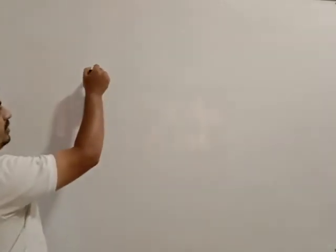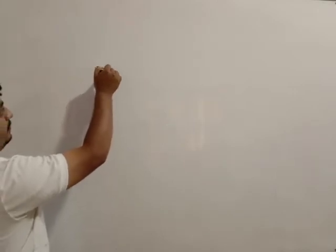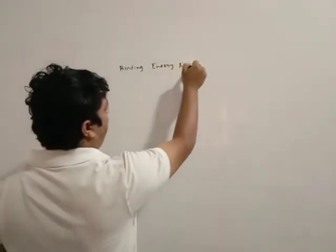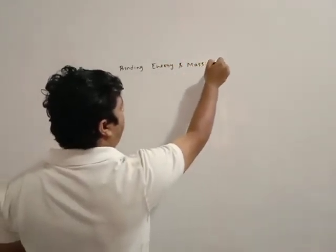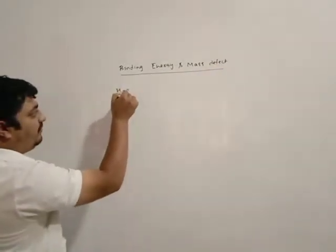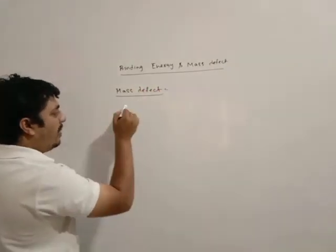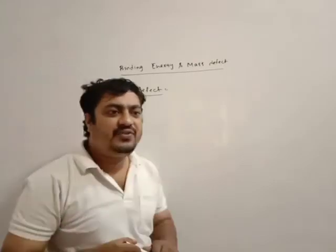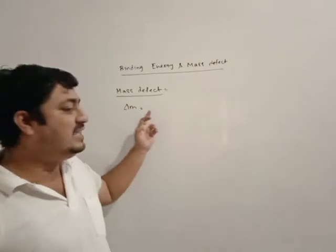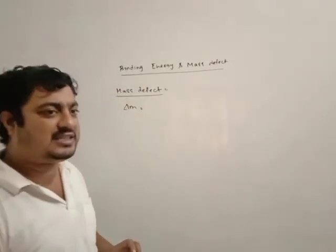Next we will go for mass defect and binding energy. First we understand the meaning of mass defect. Mass defect means the difference in mass of constituents of nucleus and actual mass of nucleus.